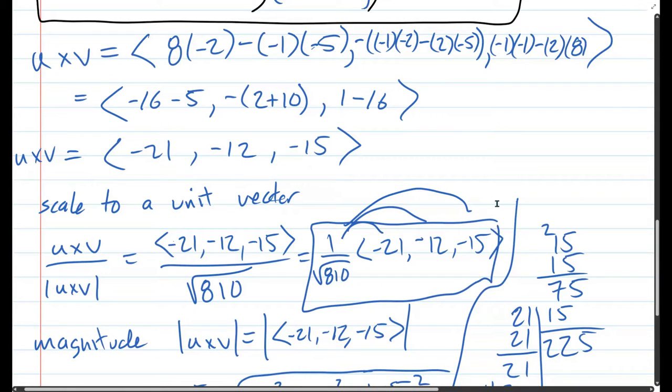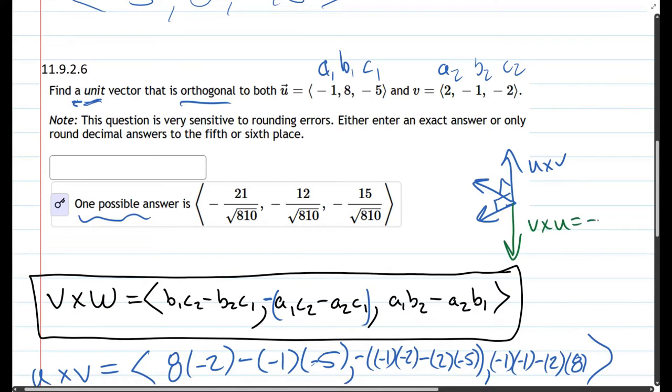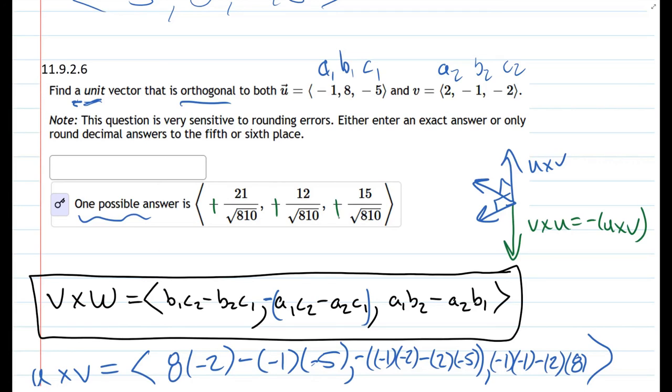Now this question did say find a unit vector - there's actually two unit vectors. This says one possible answer is, when you cross two vectors and you take their cross product, you get a vector perpendicular to both vectors or orthogonal. If you cross product in the other order, this would be u cross v, if you do v cross u, which is negative u cross v, you can use either. If you use the other answer, all those terms would change sign from negative to positive, so that would be the other correct answer, the negative of the one we computed.